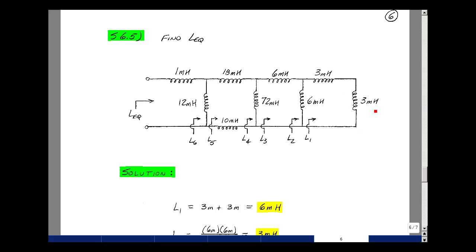So I have these two inductors in series. So 3 mH plus 3 mH are 6 mH. That's in parallel with 6, so product over the sum, but because they're equal, we halve the value. So this will be 3 mH.